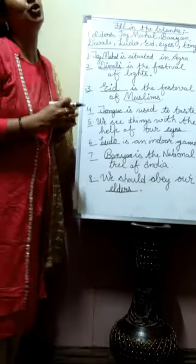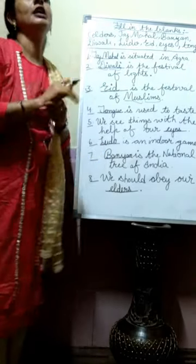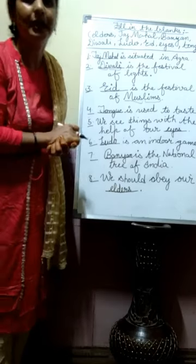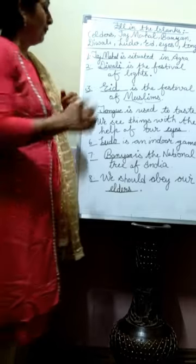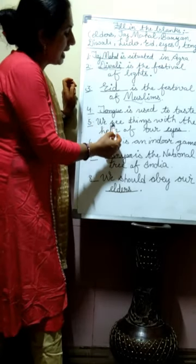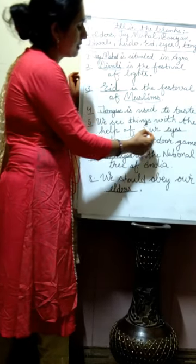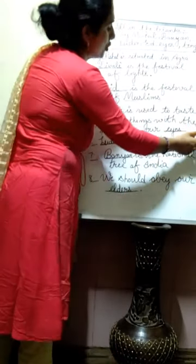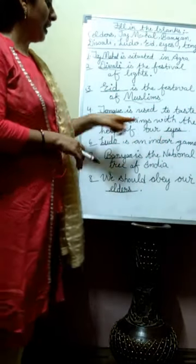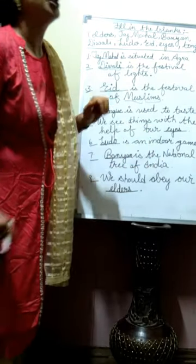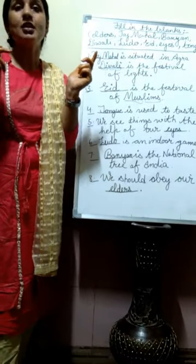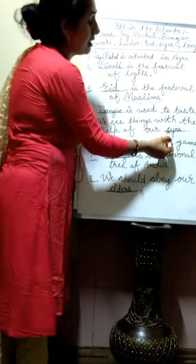Blank four: 'Dash is used to taste.' We taste things with our tongue. We identify whether something is sweet, sour, or bitter using our tongue. Blank five: 'We see things with the help of our dash.' Which organ helps us to see? It is our eyes — E-Y-E-S. So the answer is eyes.